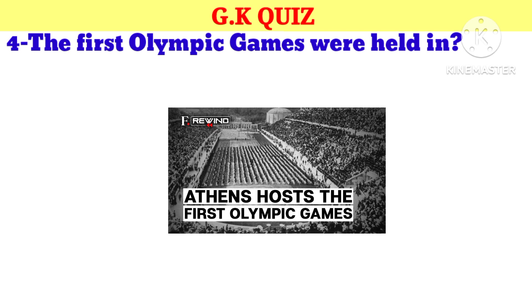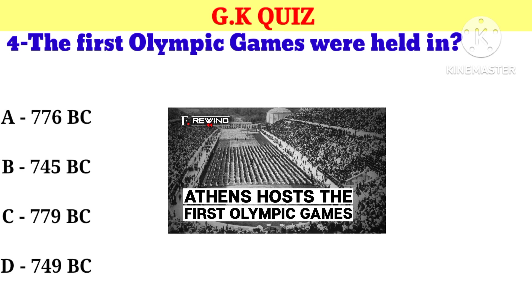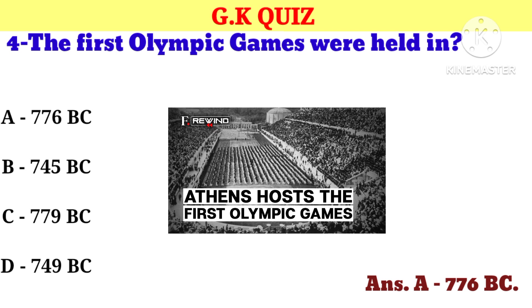Question number 4. The first Olympic game was held in — your options: A. 776 BC, B. 745 BC, C. 779 BC, D. 749 BC. And the correct answer is A. 770 BC.